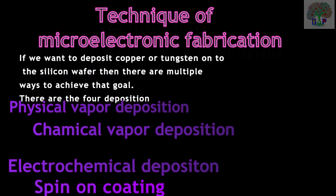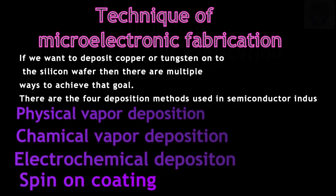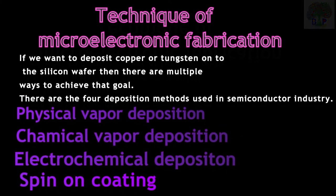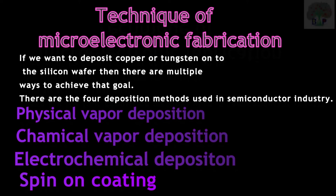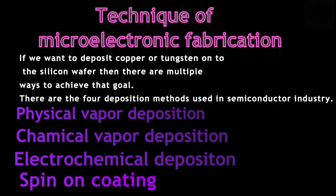If you want to deposit copper or tungsten onto the silicon wafer, there are multiple ways to achieve that goal. There are four deposition methods used in the semiconductor industry.